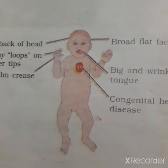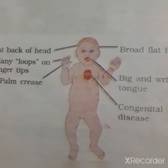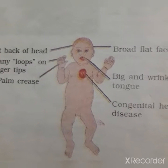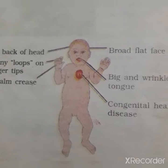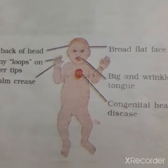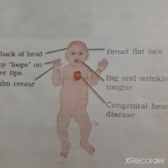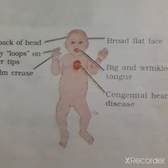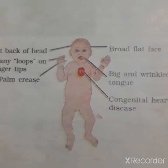Symptoms of Down syndrome include: short stature with a small round head, furrowed tongue and partially open mouth, and broad palm with characteristic palm crease. Physical, psychomotor, and mental development is retarded. These are some important symptoms of Down syndrome.